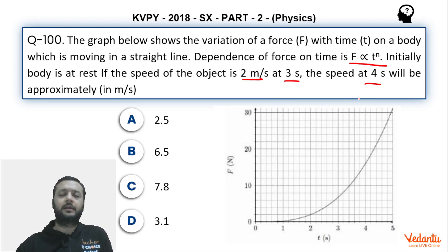I will quickly repeat. Particle starts from rest, moves in a straight line, force versus time graph is given to us. Force is also proportional to time to the power n. At t equals 3 seconds speed is 2 meter per second, we have to find the speed at 4 seconds. So first of all, we can assume that force function is some constant K into time to the power n.